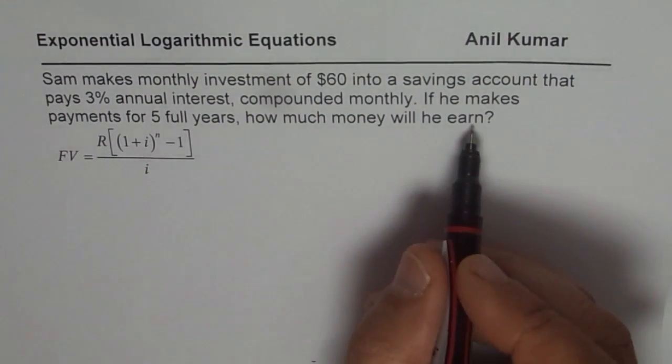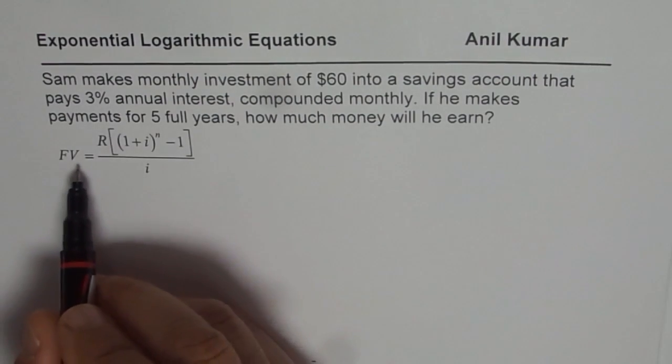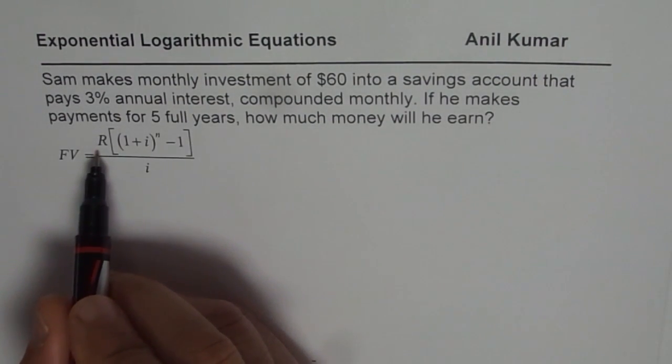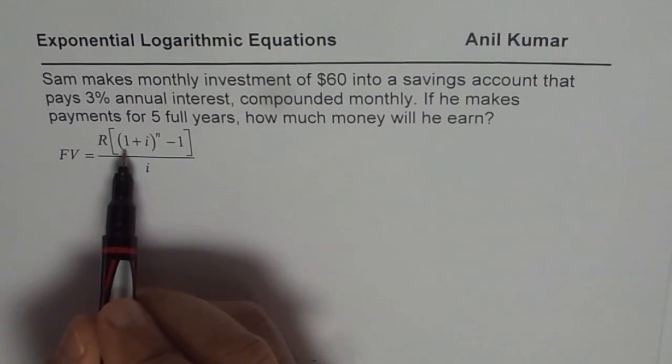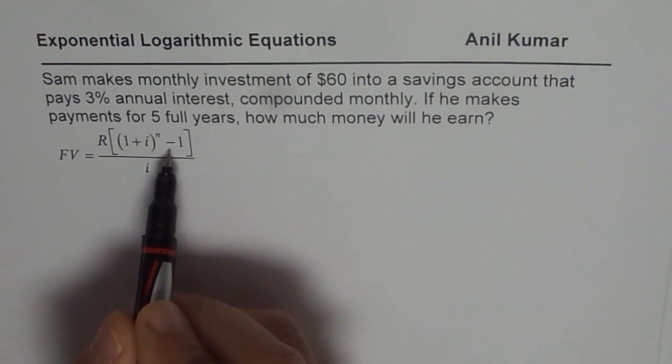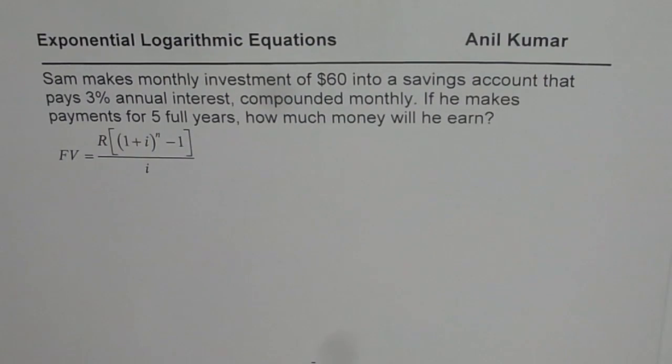That is the future value. The formula for future value in such case is: future value equals R, where R is the monthly investment, times (1 plus i) to the power of N, where i is the interest rate and N is the number of installments, minus 1, divided by i.